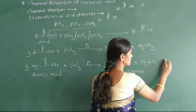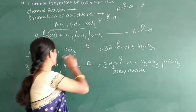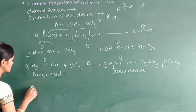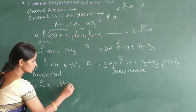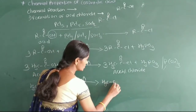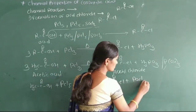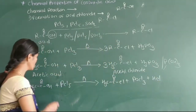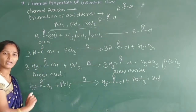H3PO3 is also written as P(OH)3. Now we see the acid reacting with phosphorus pentachloride (PCl5). Take CH3COOH — this acetic acid reacts with PCl5 to form CH3COCl plus byproduct POCl3 plus evolution of HCl. Here also the hydroxyl group is replaced by chlorine, but using PCl5.